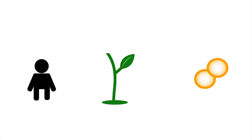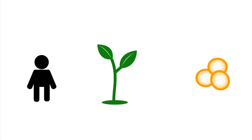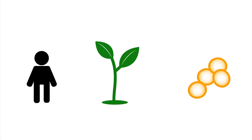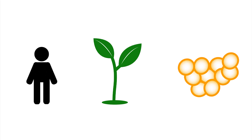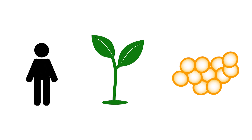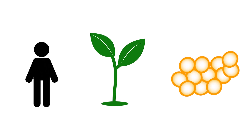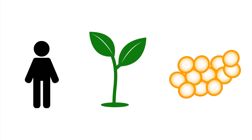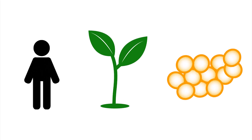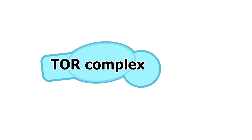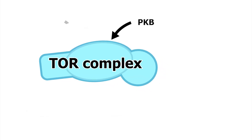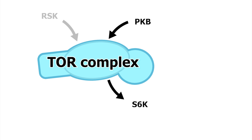All living things grow. It is interesting to know how growth is regulated, because in human cells misregulation is involved in cancer, and in plants it determines agricultural yield. A central player in growth regulation is the Tor complex, which interacts with various signaling kinases.